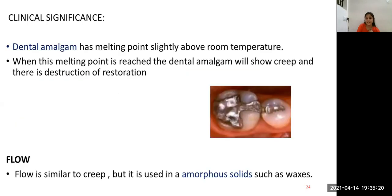Dental amalgam has a melting point slightly above room temperature. When this melting point is reached, dental amalgam will show creep and that's the destruction of the restoration. Flow is similar to creep, but it is used in amorphous solids such as waxes.